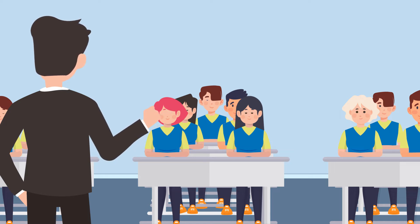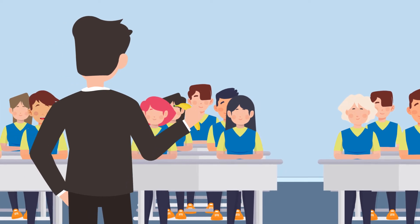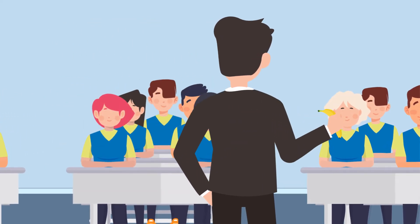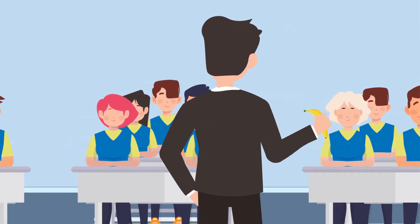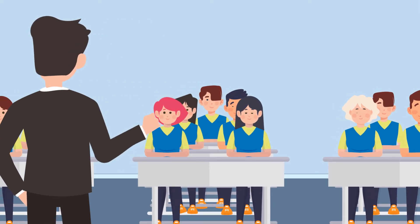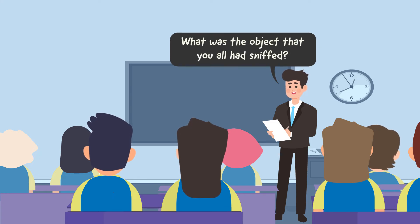After making the groups, ask the students to close their eyes — make sure no one is cheating. Now take the banana and walk to each group one by one, asking the students to sniff the object. This will pique their curiosity! When all the groups are done sniffing the banana, hide it and ask the students to open their eyes. Then ask them what the object was that they had sniffed. Some of them may say banana.